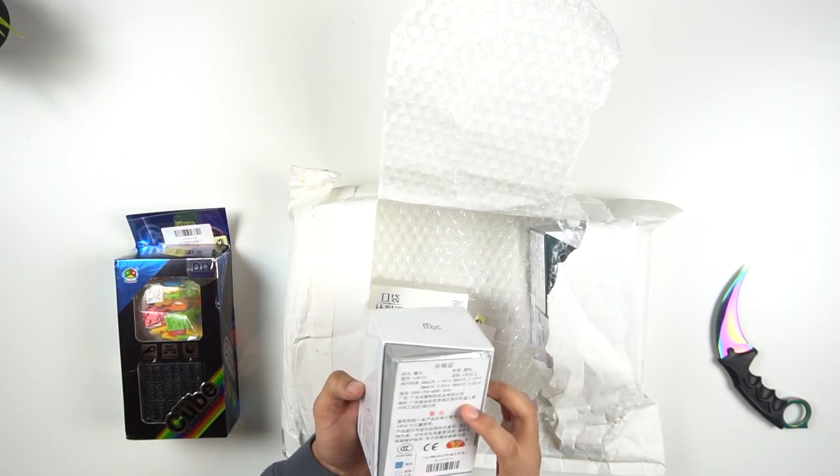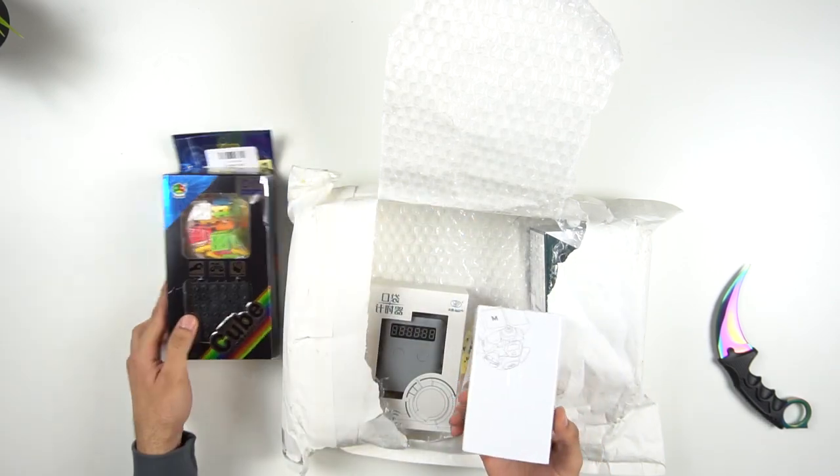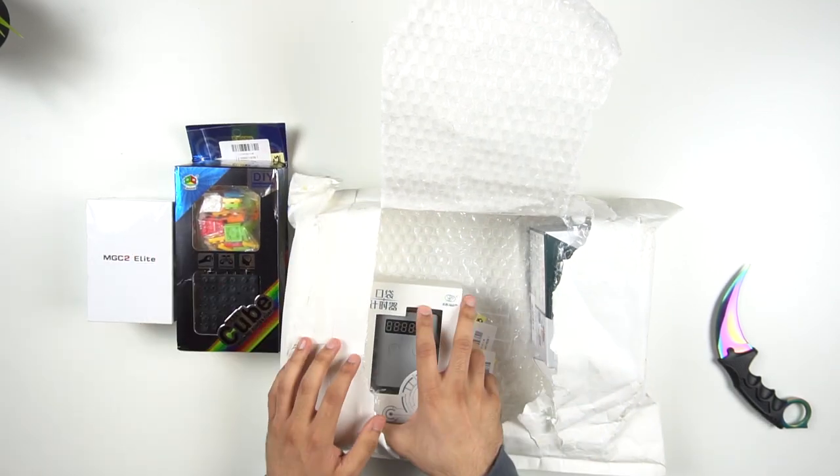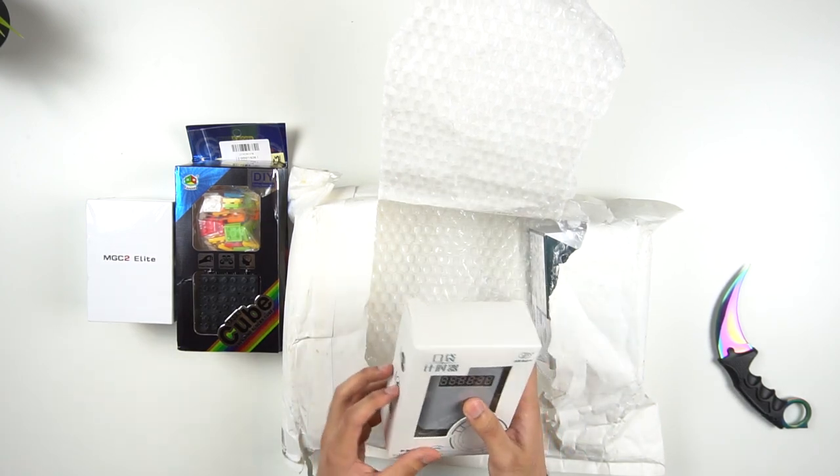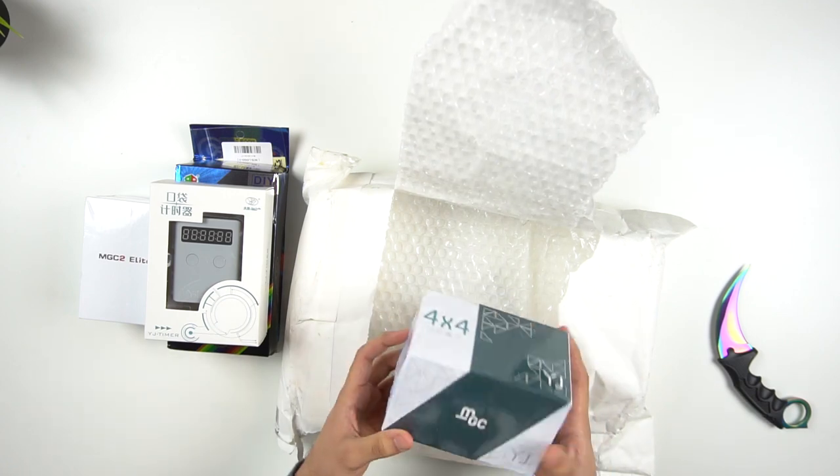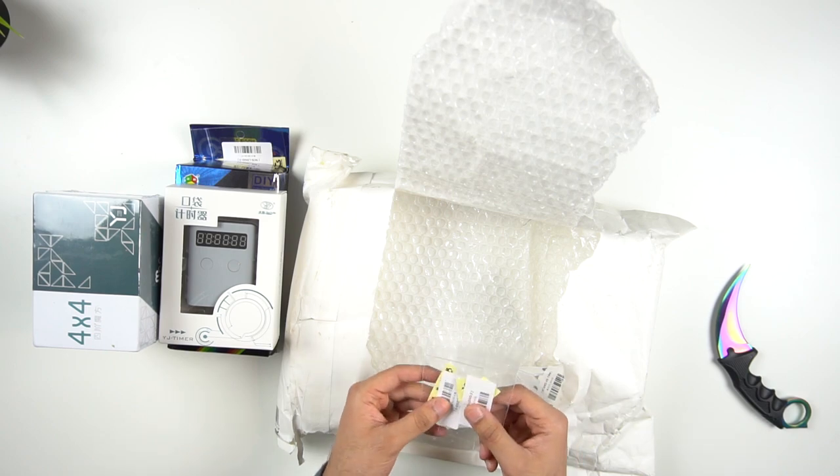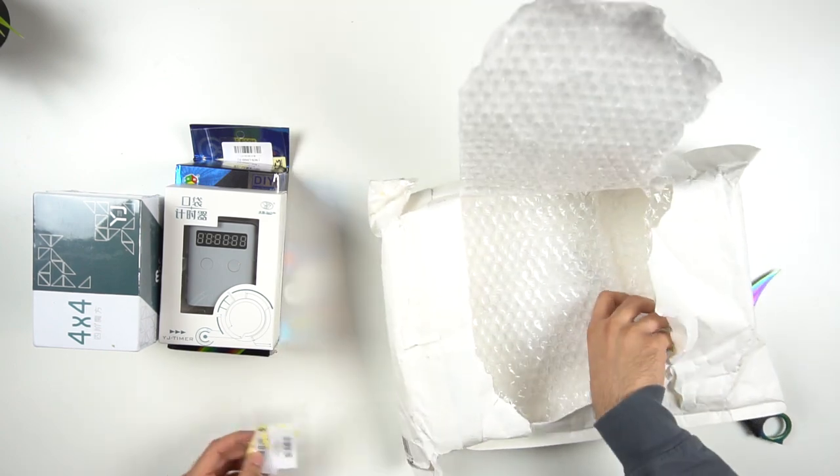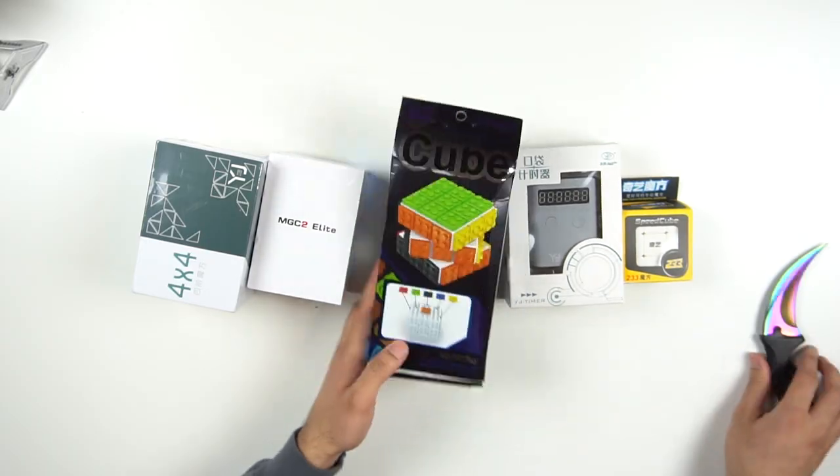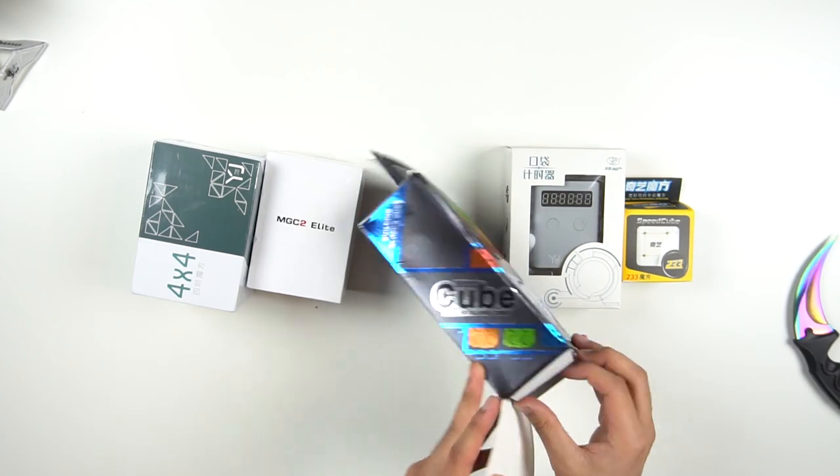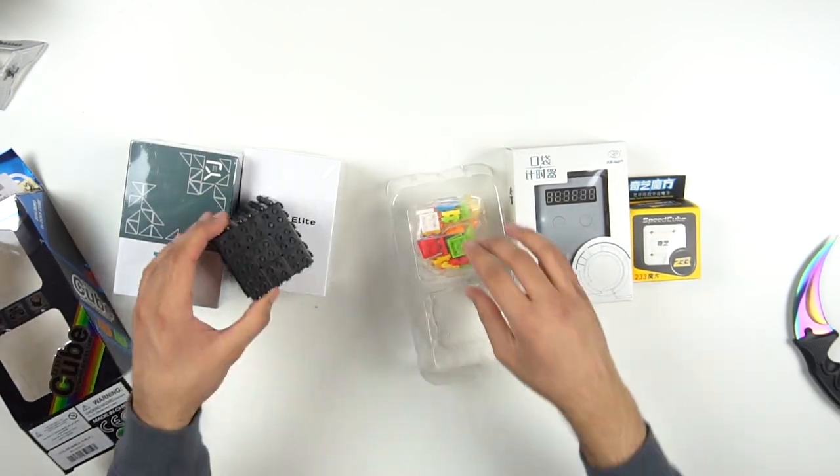We've got the MGC Elite 2x2 here. This is the Lego Cube, it's not actually called Lego because it's not actually Lego, but it's made by Fanchun. And then we have this YJ timer that I'm really excited to try out. And in here is the YJ MGC 4x4 Elite. And then we have some speedcubeshop logos because I need to re-logo a lot of my cubes. And then here is a Qi 3x3x2. I've been wanting to try this and I finally have it. People are saying it's a really fun cube to play with. So let's check it out.